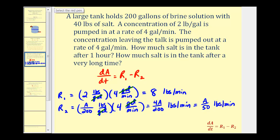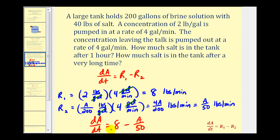So our differential equation is dA/dt equals 8 minus A divided by 50. This is a linear first-order differential equation, which we can solve by using an integrating factor. Let's go ahead and set this up on the next slide.